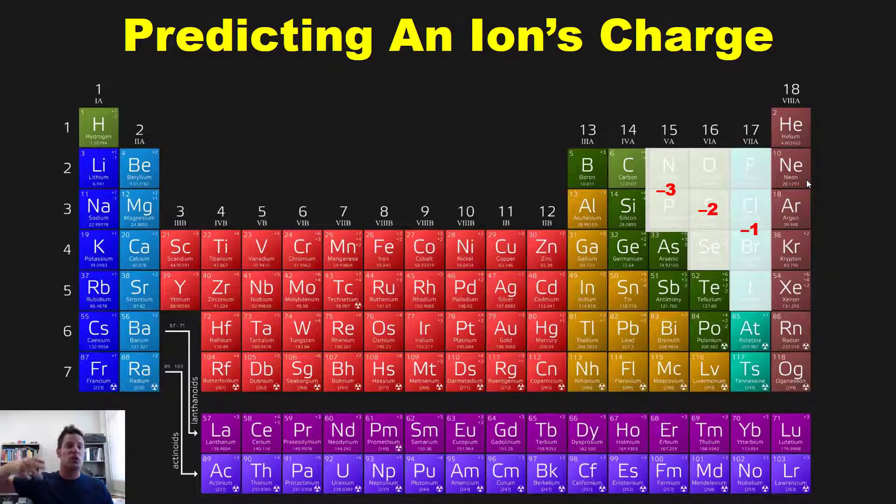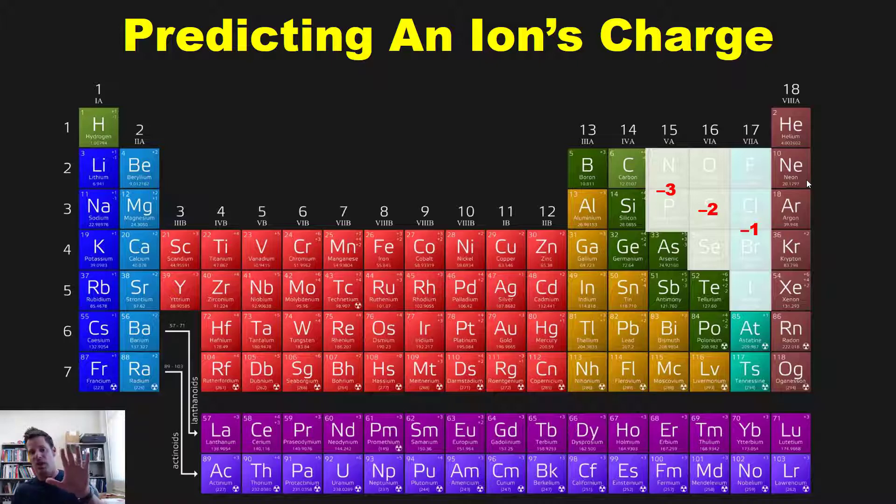In other words, it's a lot easier to lose three electrons than it is to gain five electrons. Therefore, that is what aluminum does. So when aluminum bonds with other elements, it likes to gain a plus 3 charge and shift three columns to the left, as opposed to five columns to the right.